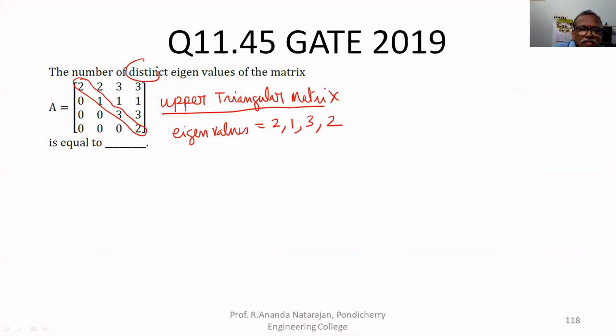What is distinct? So two numbers are repeating, therefore distinct values are, number of distinct values, only 3.